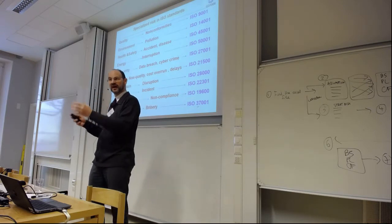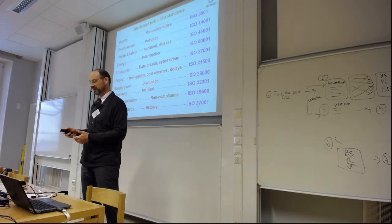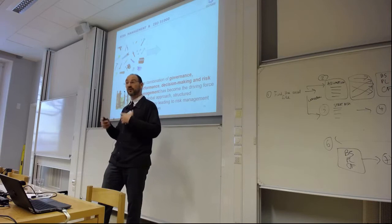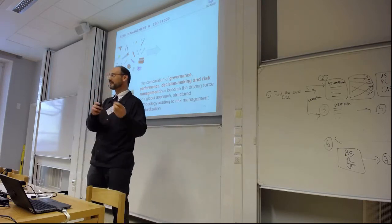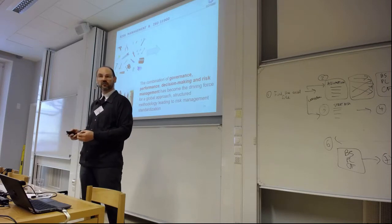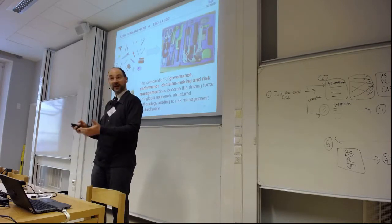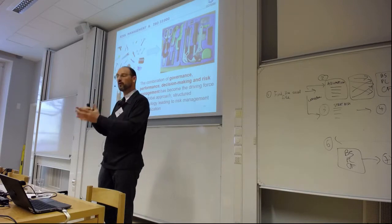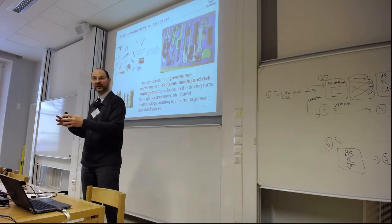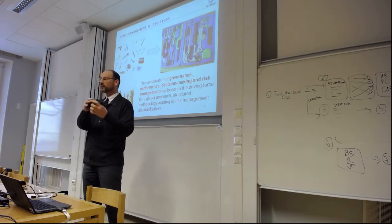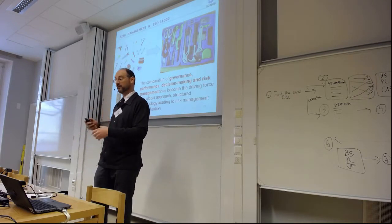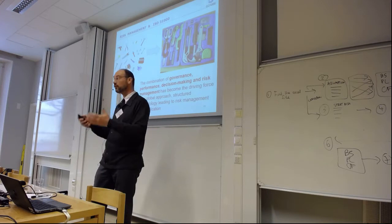You might tell me, well, in my company I already have a lot of tools and techniques for dealing with particular types of risk. So what should I do with all of these aspects? ISO 31000 will propose a coherent structure, a structured approach to deal with all types of risk, so when you reconcile, you really connect risk, performance, decision-making, governance, etc.